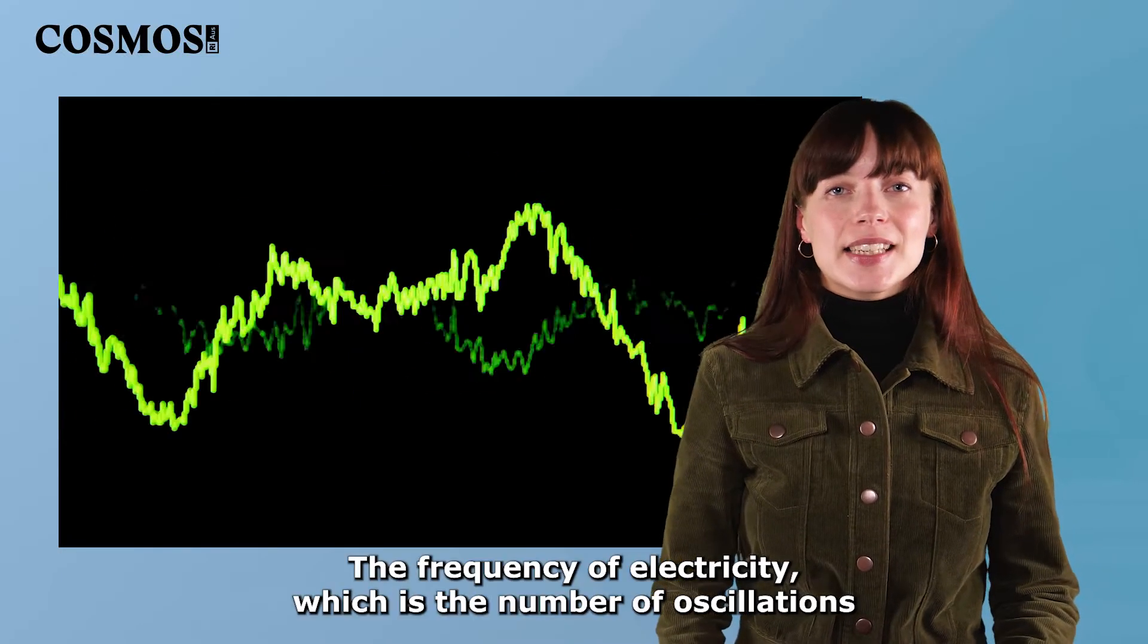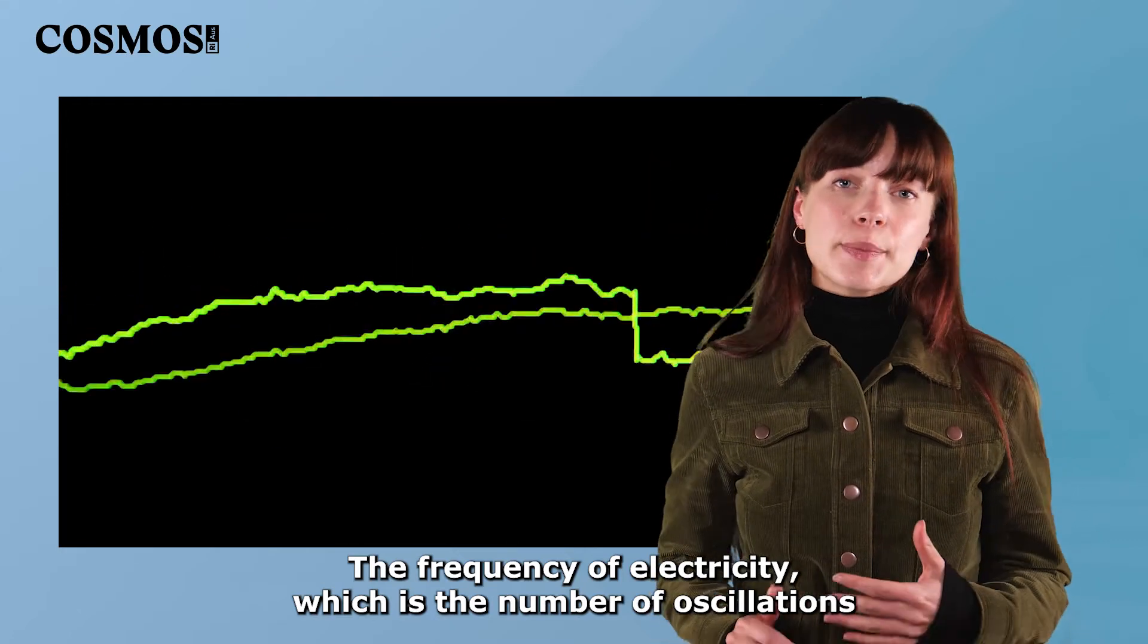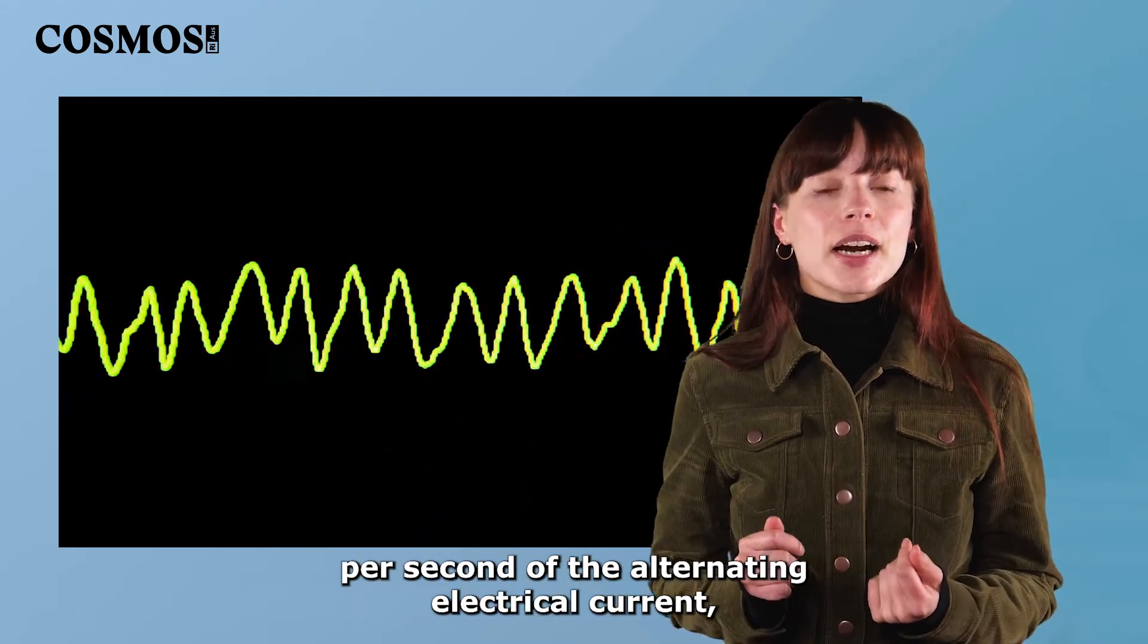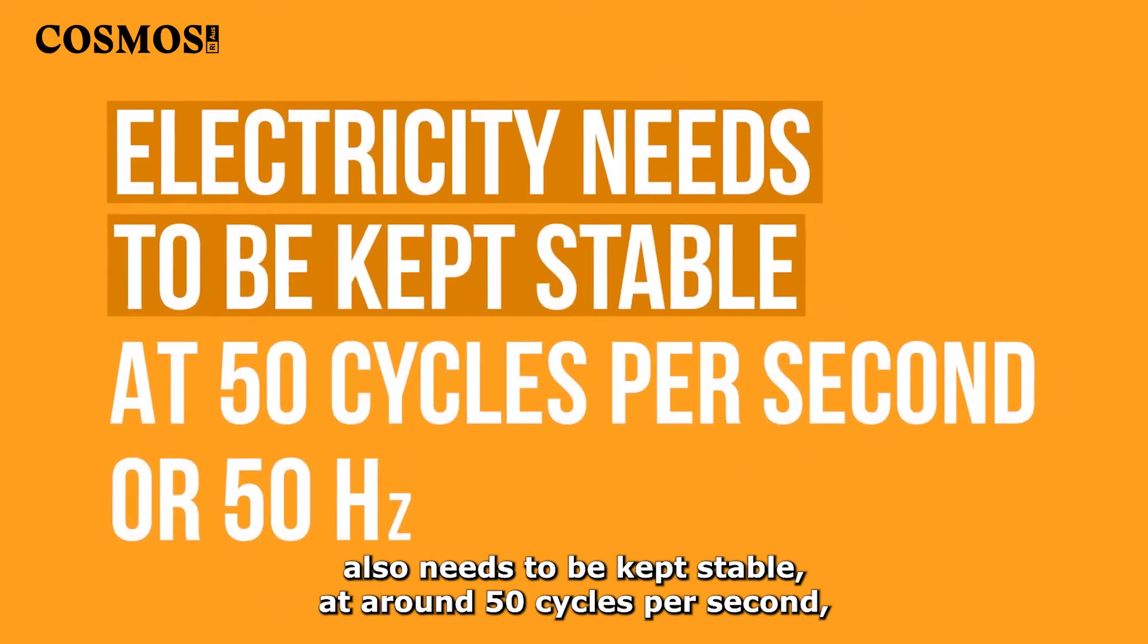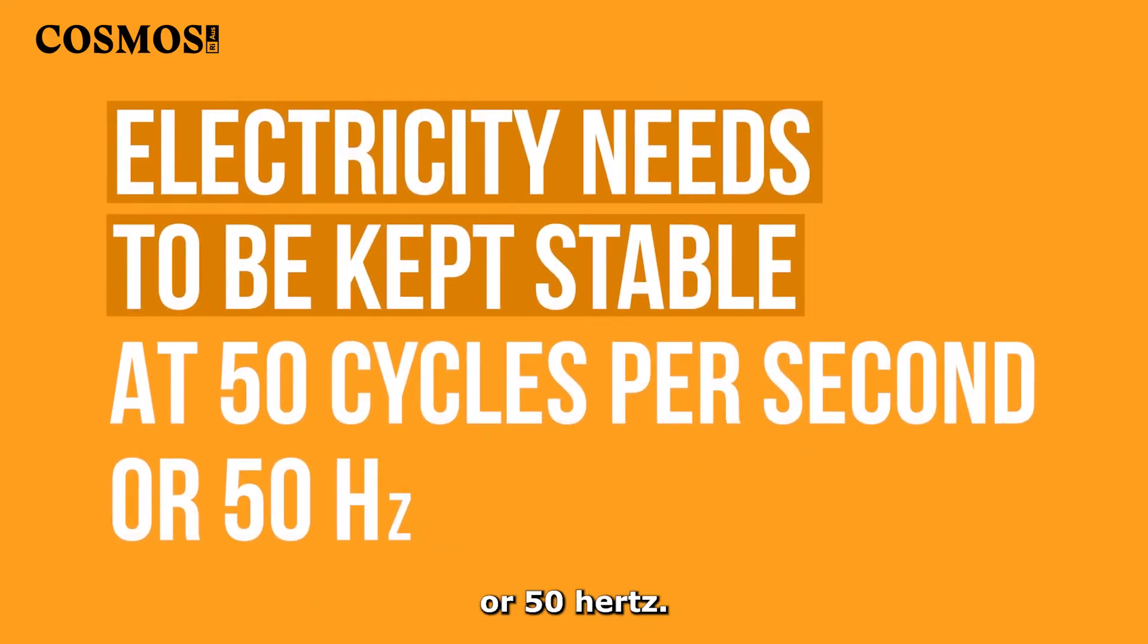The frequency of electricity, which is the number of oscillations per second of the alternating electrical current, also needs to be kept stable at around 50 cycles per second, or 50 hertz.